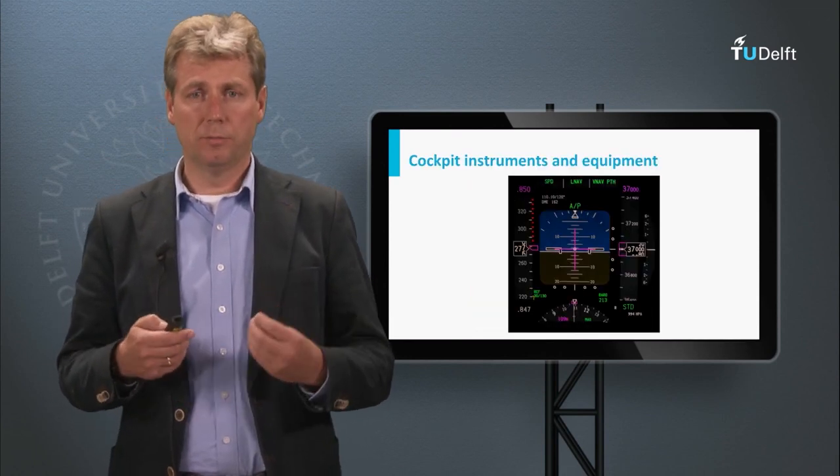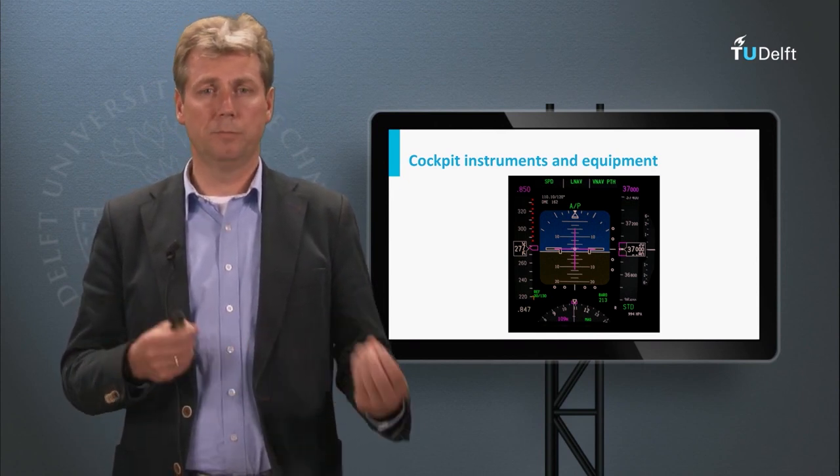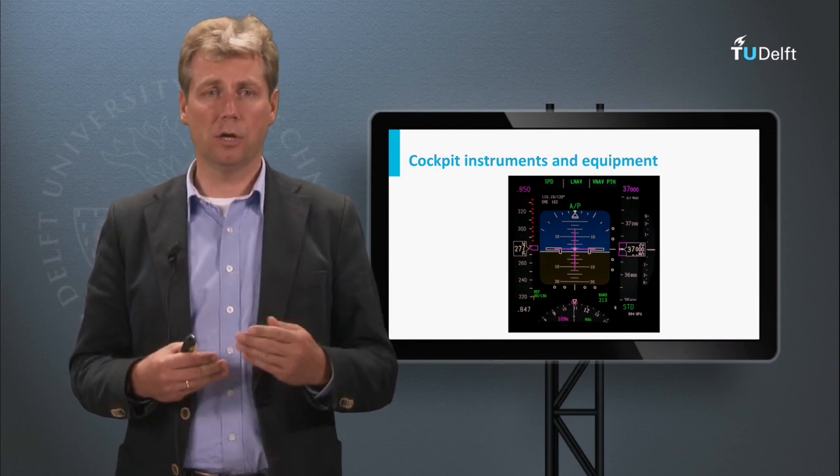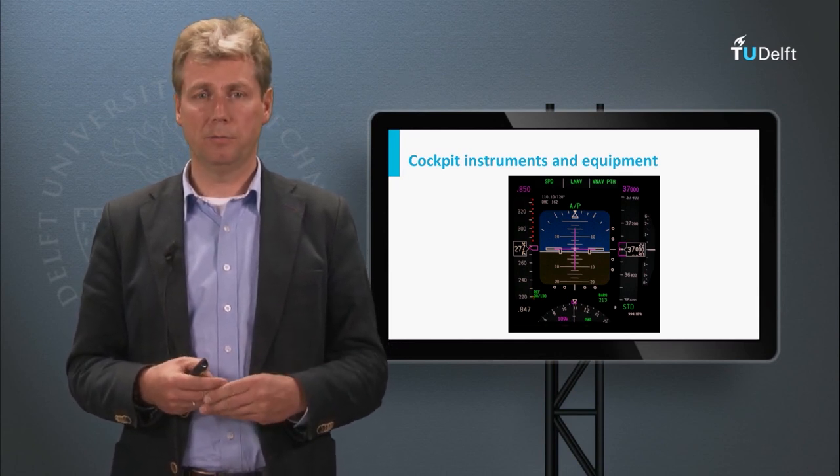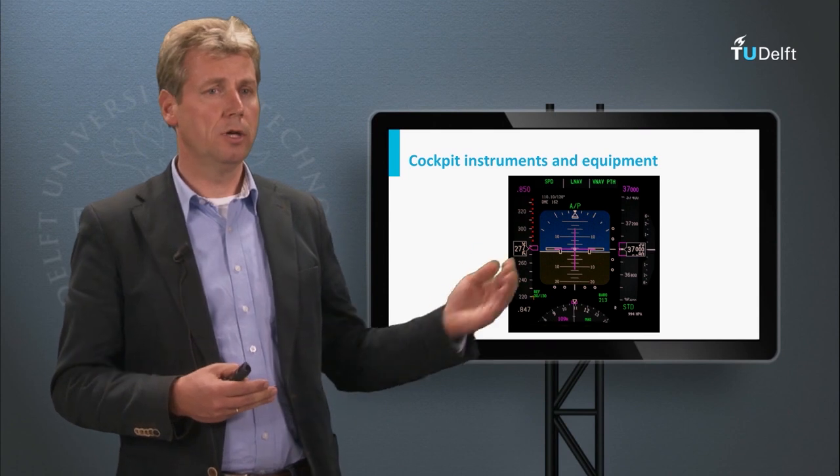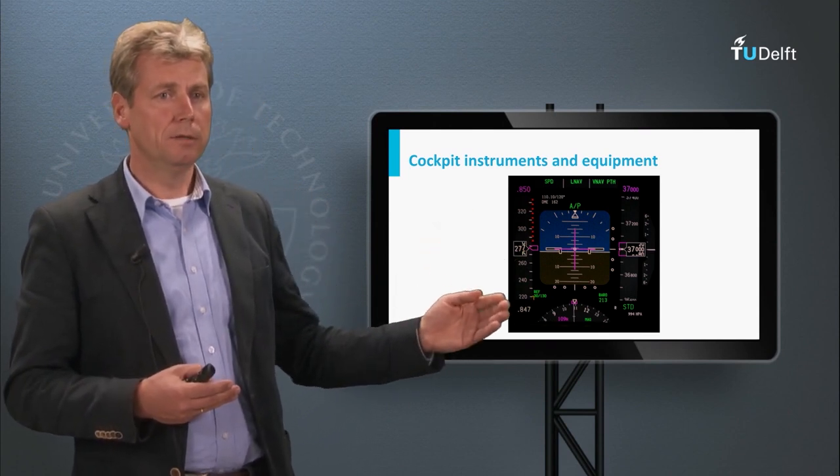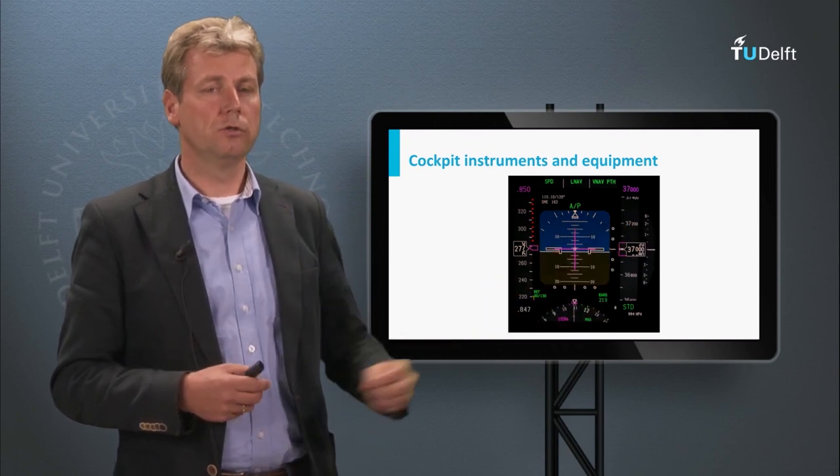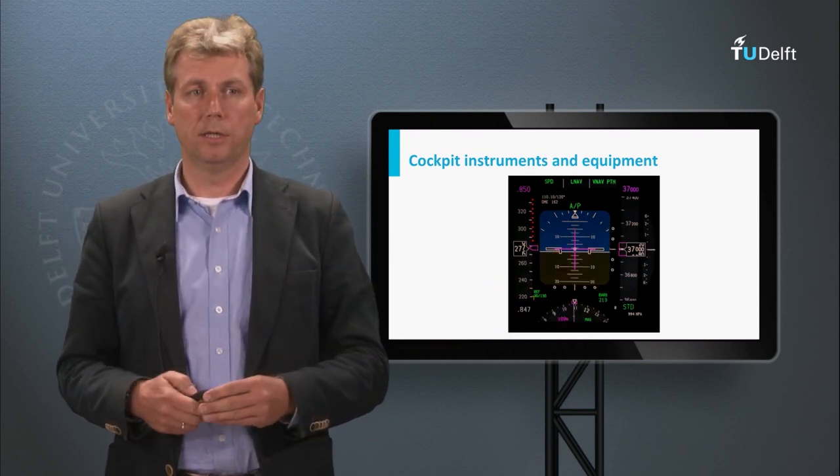The instruments show altitude, speed, position, heading and we will look at a few of these parameters. We will start off with the primary flight display, which shows on this side the speed and on the other side it shows the altitude. And this is also the order in which we will discuss them.